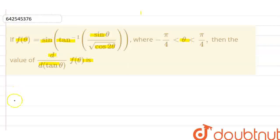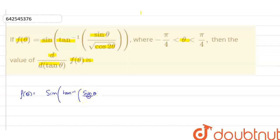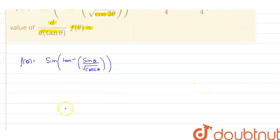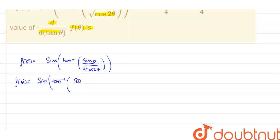So in this question, we need to differentiate f(θ) with respect to tan θ. Let us solve the question. We are given that f(θ) = sin(tan⁻¹(sinθ / √cos2θ)). As we know that cos2θ = cos²θ − sin²θ, therefore our new value of f(θ) becomes sin(tan⁻¹(sinθ / √(cos²θ − sin²θ))).